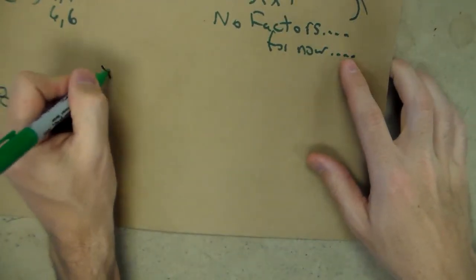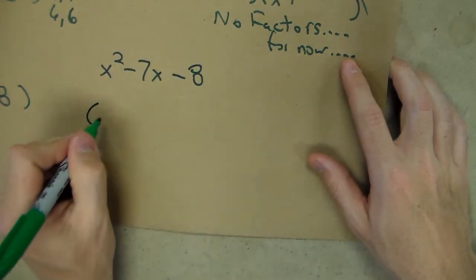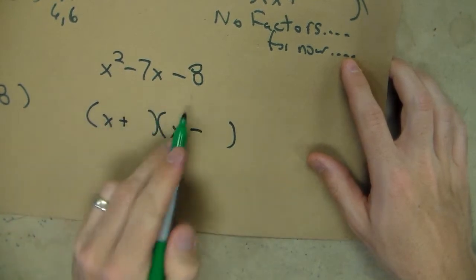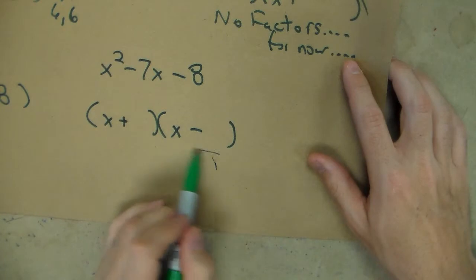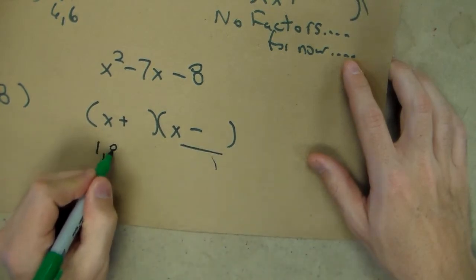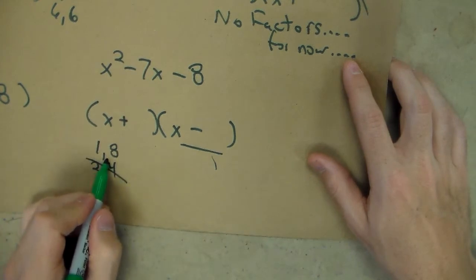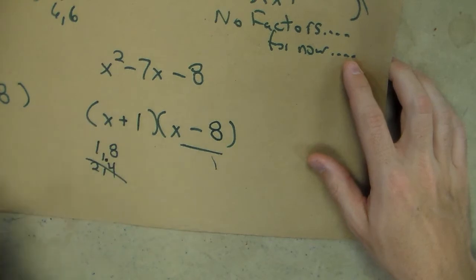Last one, if we did x² - 7x - 8, we have a positive and a negative because we have a negative product. Negative 7 means this value needs to be bigger. Our factors of 8, we go 1 and 8, 2 and 4. Well, 1 and 8 have a difference of 7, so I'm going to do (x-8)(x+1).